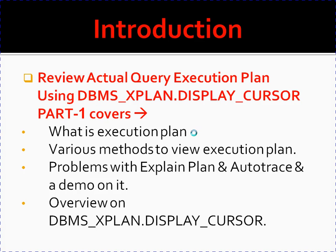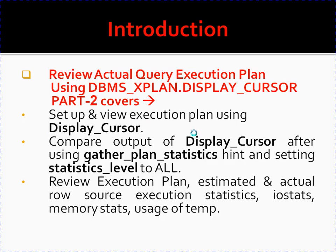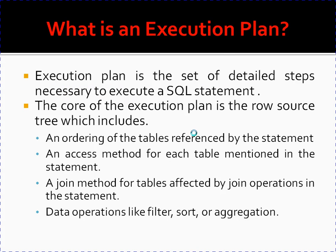In Part 2 I'll be covering setup and how to view execution plan using the DISPLAY_CURSOR function, comparing output of DISPLAY_CURSOR after using the GATHER_PLAN_STATISTICS hint and after setting statistics level to ALL. I'll execute some queries and review the estimated and actual resource execution statistics, the iostat, memory stats, and usage of temp. I'll explain all of those and show some demos.